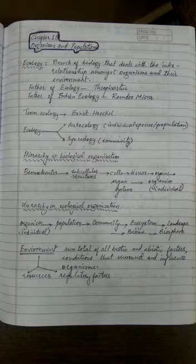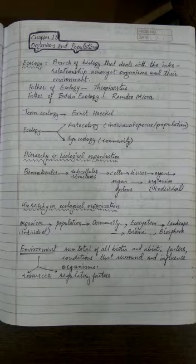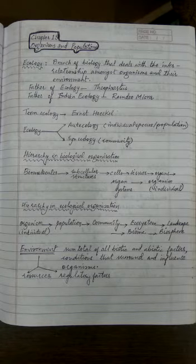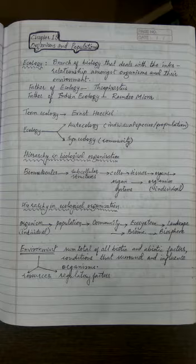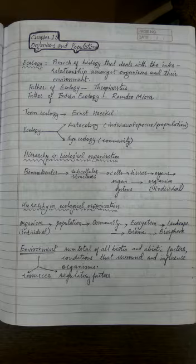Similarly, there is a hierarchy in ecological organization. A single individual organism of a particular species, when all brought together, gives rise to a population. Population is the number of individuals of the same species at a particular time in a particular area. In a given area there are many species — plants, animals, and microorganisms — and all different populations together form a community. Communities interact among themselves along with the environment to form an ecosystem, ecosystems join to form a landscape, landscapes join to form a biome, and all biomes together form the biosphere.